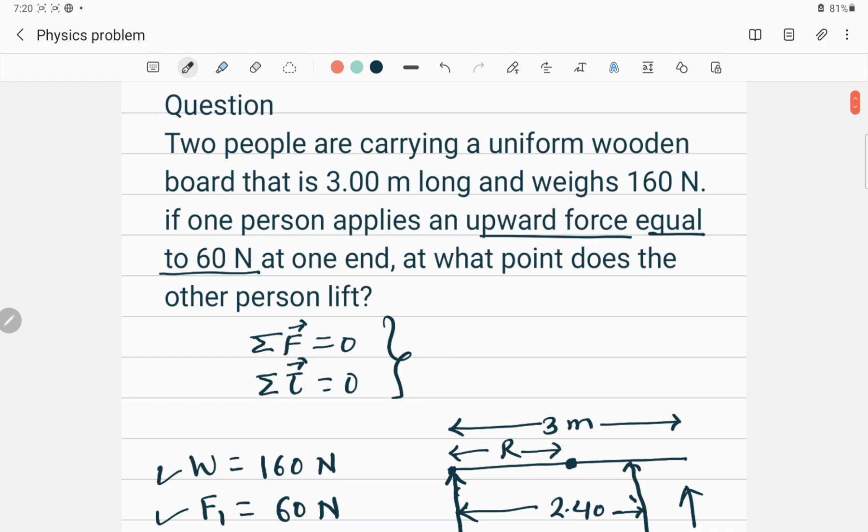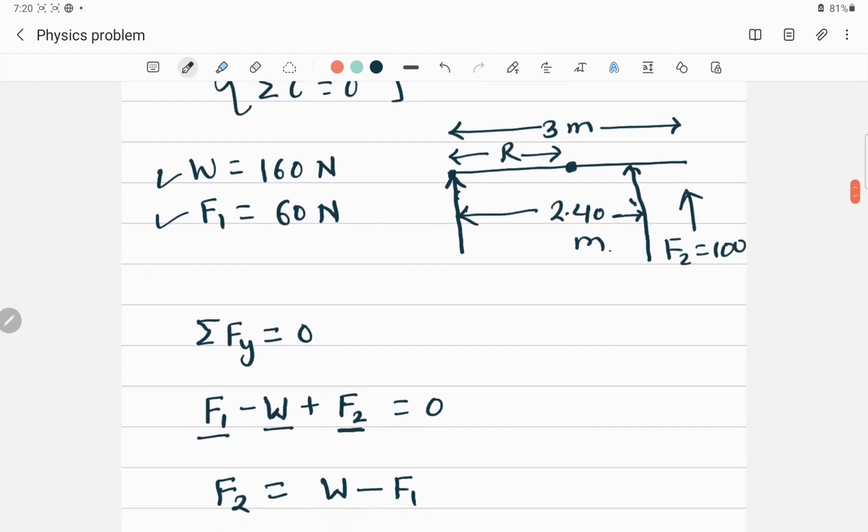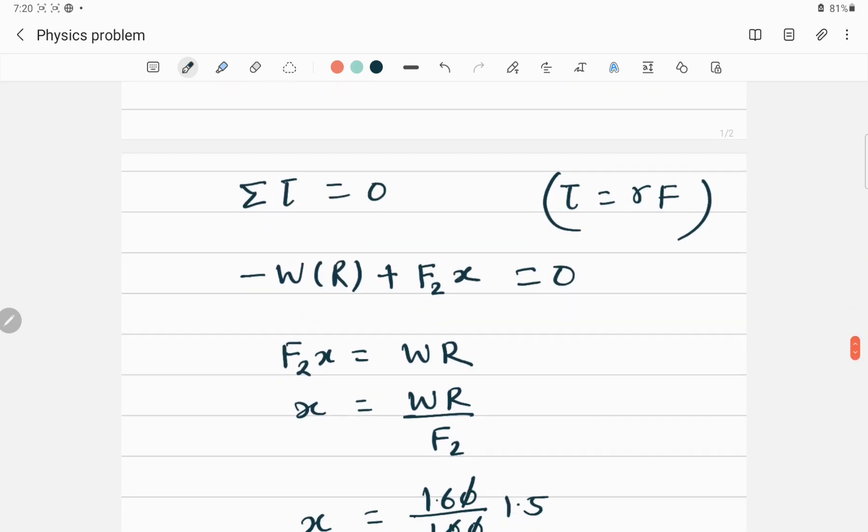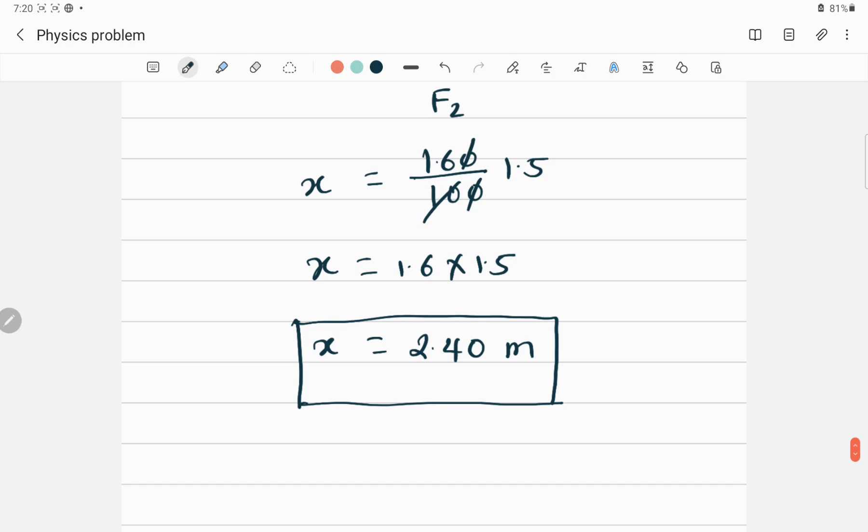So to solve the problem like this, in which equilibrium conditions are satisfied, we can apply these two equilibrium conditions. The first condition, sum of all the forces equal to 0. And the second condition, sum of all the torques should be 0. By using these approaches, you can solve this kind of problems. So our final answer is this.